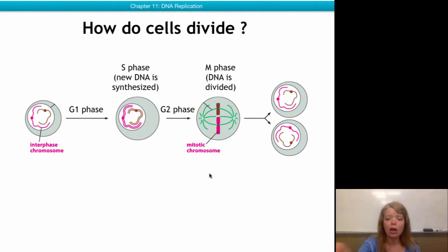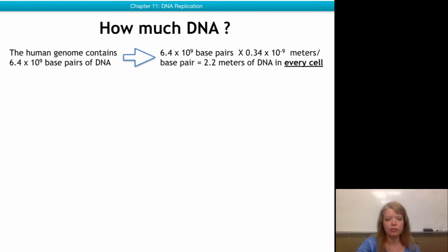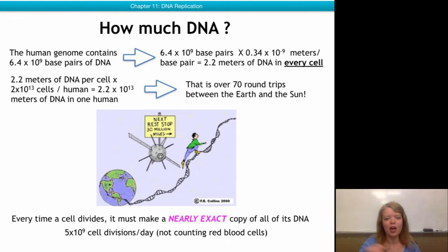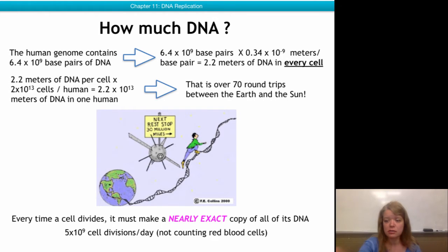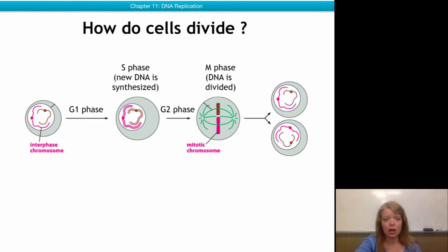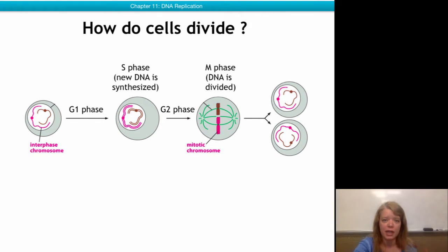Our body has about 5×10⁹ cell divisions per day, and that's not counting the red blood cells. So let's first look, before we look at how DNA is replicated, let's look at how cells divide.